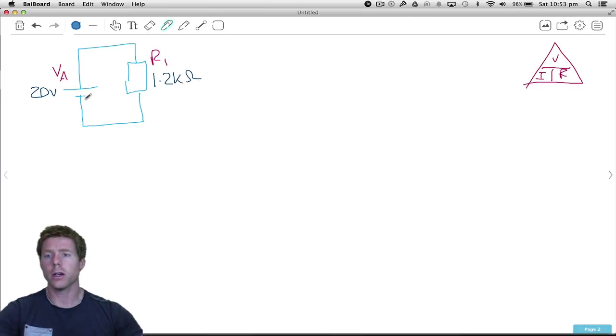So the unknown in this case is current. How much current is flowing from negative to positive in the circuit? Well in order to figure out current we need voltage divided by resistance. What is the voltage? It is 20 volts. What is the resistance? That's 1.2k ohms.